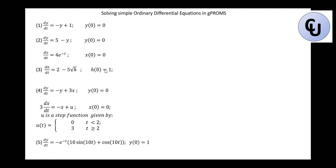Hello, welcome to another video on GPROMS. Today we want to see how we can solve simple ordinary differential equations in GPROMS. Let's assume we have this equation: dy/dt equals minus y plus one, with the initial condition that at t equals zero, y is equal to zero. How can you solve this in GPROMS?